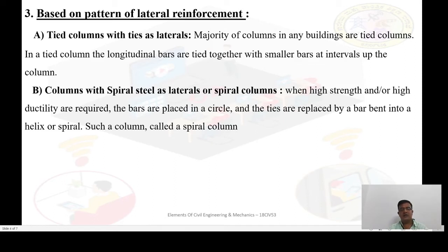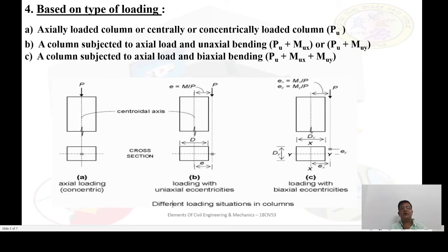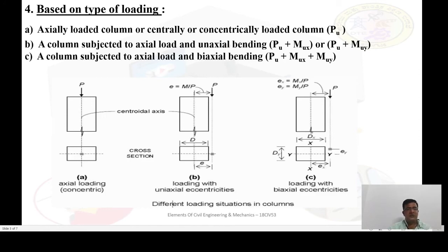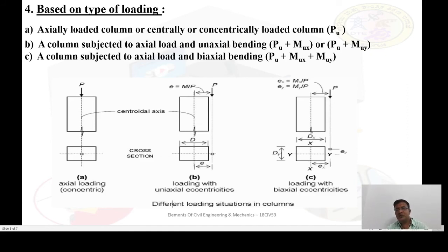Such a column is called a spiral column. Next, classification based on type of loading — it is very important to know the type of loading on the column. First, axially loaded column, also called centrally or concentrically loaded column. Second, column subjected to axial load and uniaxial bending. Third, column subjected to axial load and biaxial bending. In figure A, it clearly shows the point of application of load exactly at the CG of the column. In figure B, the point of application of load is not exactly at the CG — it may be at some distance. In figure C, this clearly shows the point of application of load not exactly at the CG of the column.